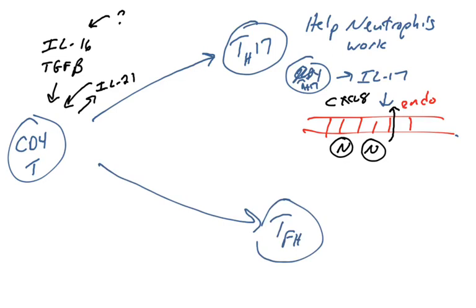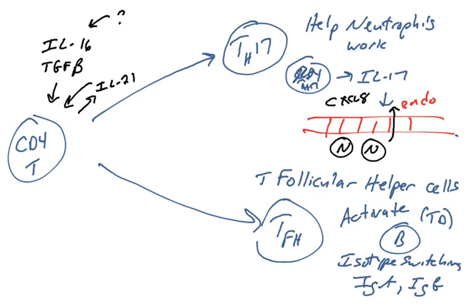TFH cells, which stand for T follicular helper cells, because these are going to stay in the follicles of the lymph node. Their job is going to be activating B cells. When we covered B cell activation, we learned about the thymus dependent and thymus independent B cell activation. These are the helper T cells that help activate B cells in a thymic dependent manner. We're actually going to have a whole separate video on the way that these cells function to stimulate B cells to activate and isotype switch.